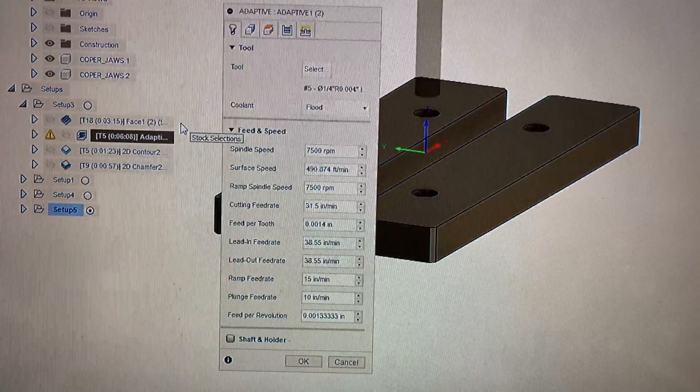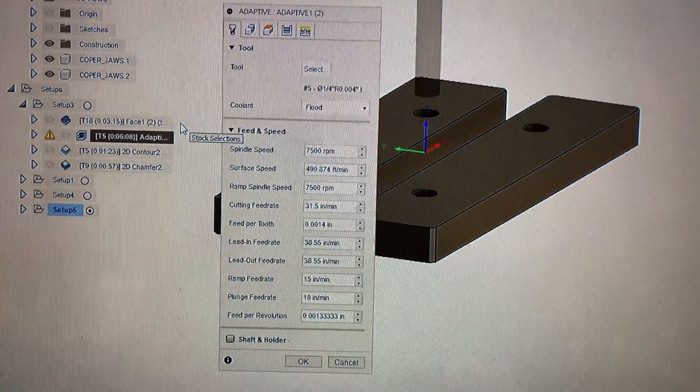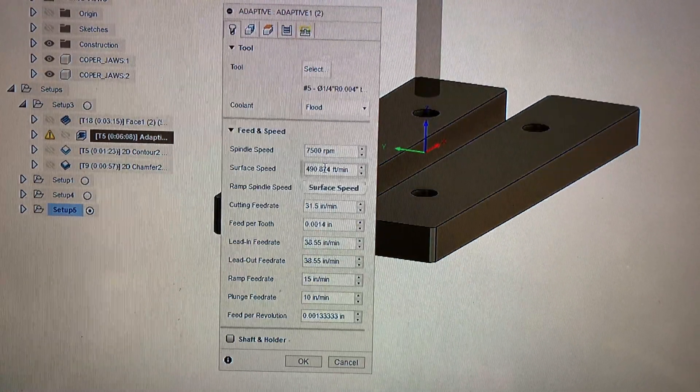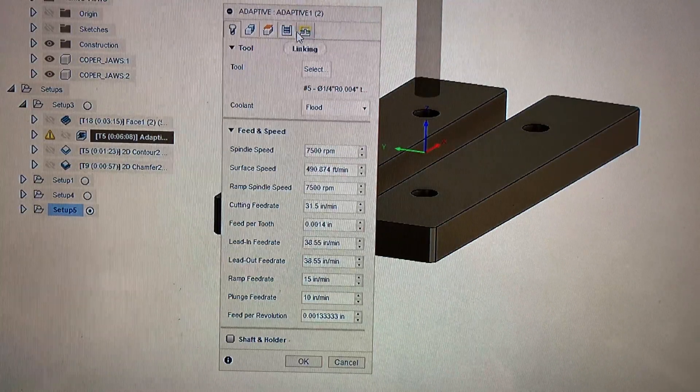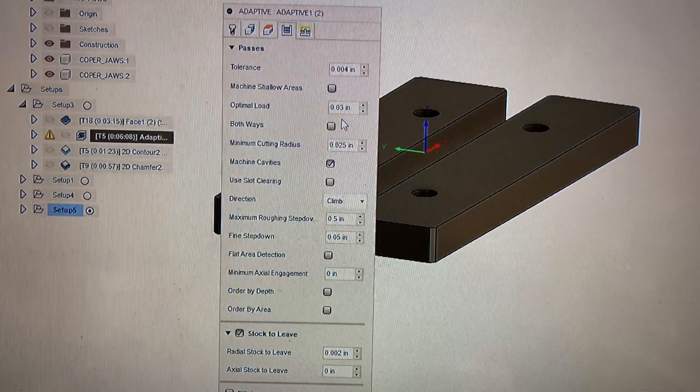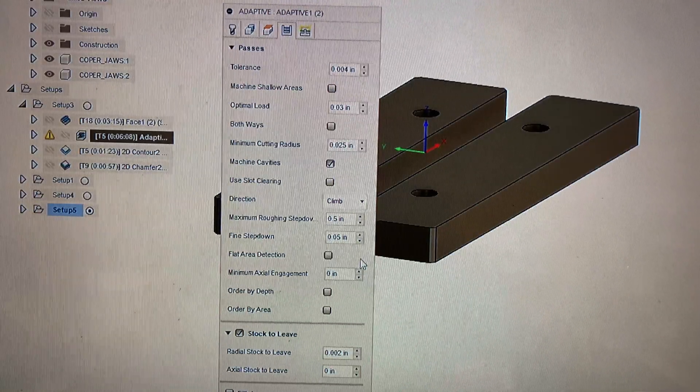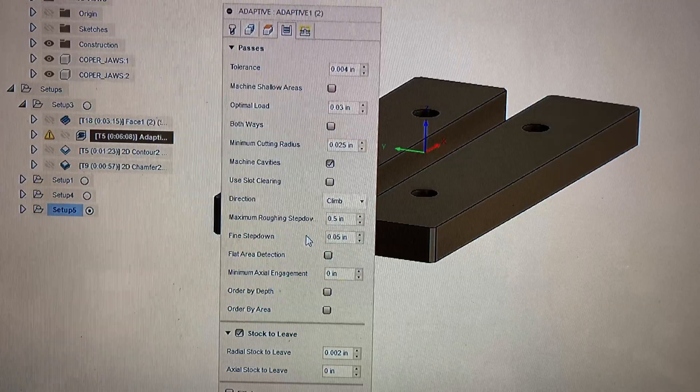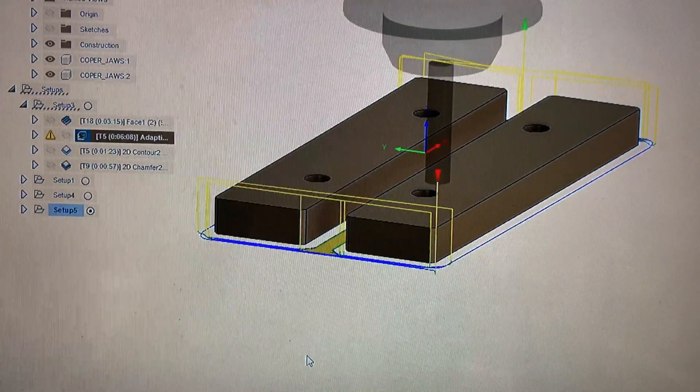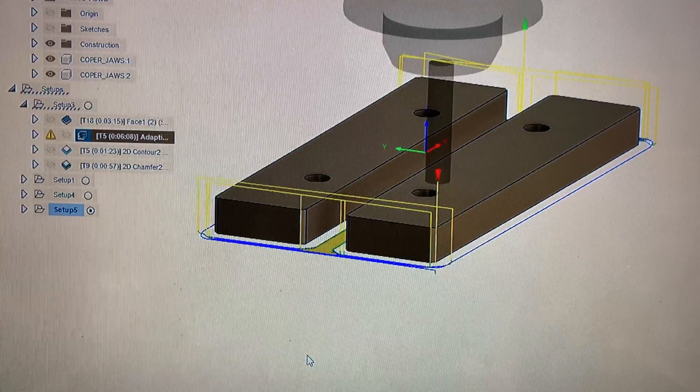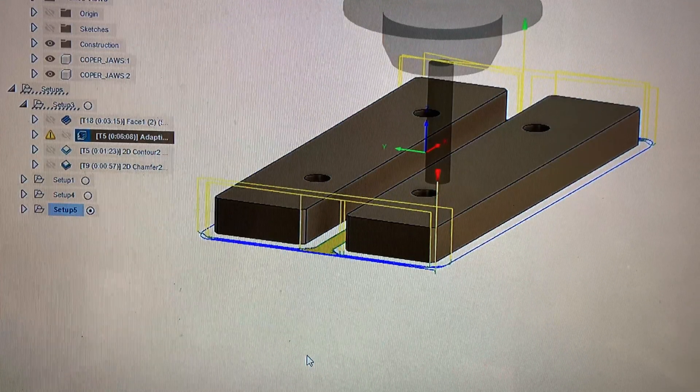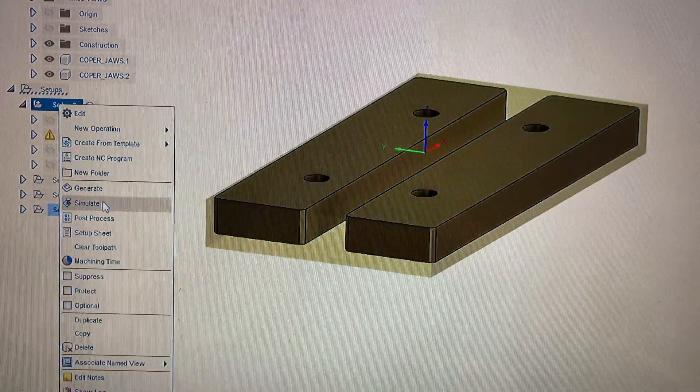For the adaptive we're running a three flute quarter inch end mill by Lakeshore Carbide at 7500 RPM, 31 inches per minute, and a width of cut of 30 thou and a 0.5 depth of cut. The recommendation for cutting copper that I found on the internet was to take your normal aluminum speeds and feeds and run them about 70 percent.